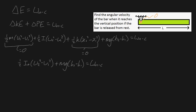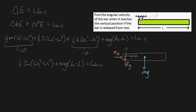Let's talk about our work done by non-conservative forces by drawing a free body diagram. When the bar is dropped from rest, you will have mg acting downwards at the center of mass, and because this is a pin support, you'll have a vertical force Ry and a horizontal force Rx. I'm using x as positive to the right and y as positive upward. When the bar reaches its vertical position, it will look like this — I've superimposed the two free body diagrams on top of each other.